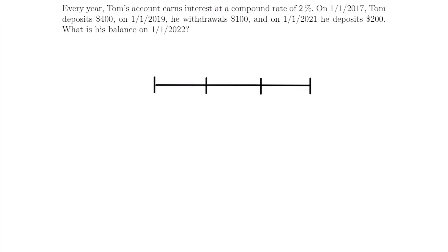Here's our example. Every year, Tom's account earns interest at a compound rate of 2%. On January 1st, 2017, Tom deposits $400. On January 1st, 2019, he withdraws $100. On January 1st, 2021, he deposits $200 more. What is his balance on January 1st, 2022? The first thing I always do with these problems is draw a timeline, which helps you organize each transaction and figure out what values you're looking for.